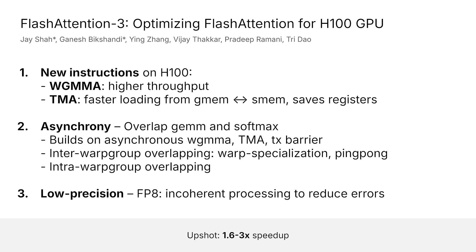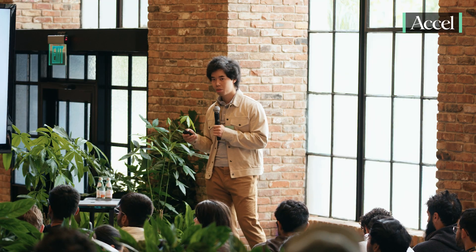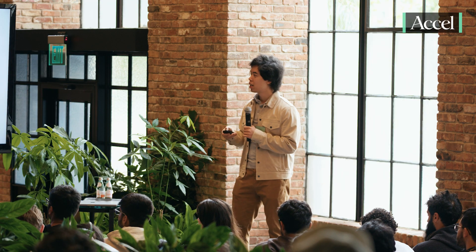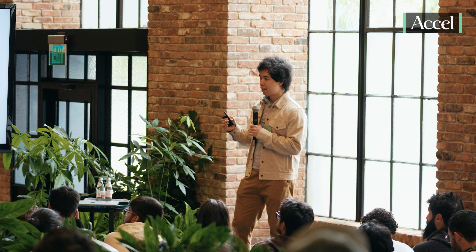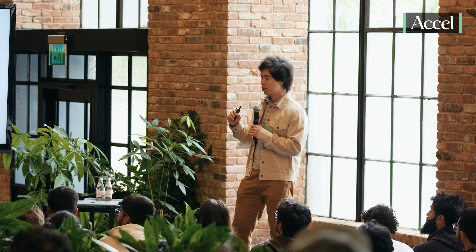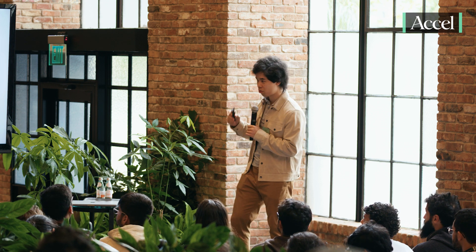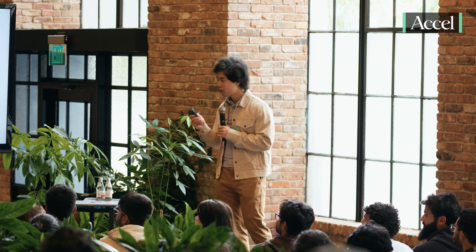A lot of the code was written by Jay and Ganesh. I'll talk about three things we care about for the H100. First, you want to use these new instructions: warp group MMA for higher throughput, and you want to use the TMA to do a lot of the memory loading. I won't go over the first one too much because it's conceptually straightforward, but the second one — asynchrony — I think is a lot more interesting.